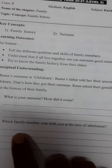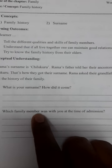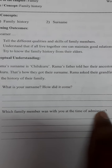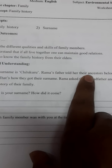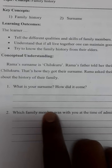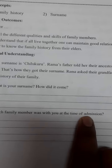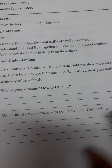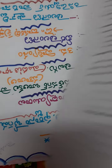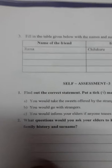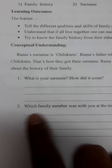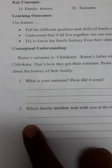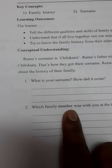Find out by asking your parents. Which family member was with you at the time of admission? At the time of Rama's admission, her father was with her. Which family member was with you at the time of admission into Red Cross School? Was it your father or your mother? You have to write here. If your father was there, write father. If your mother was there, write mother. And if your relative was there, write your relative's name.